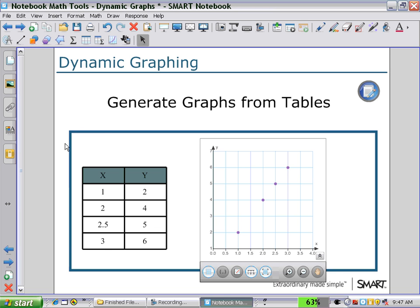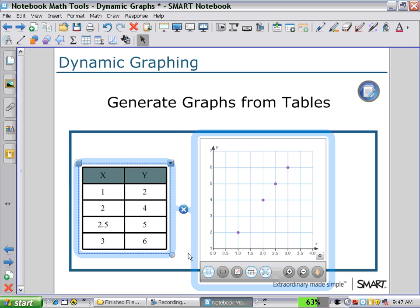As we highlight the table, you'll see that dynamic link and we can break that link by selecting the x between the blue squares. Now that the link is deselected, we can change points in our table and that will not be updated in the graph.